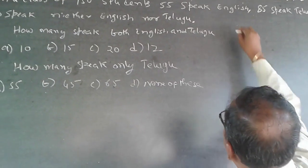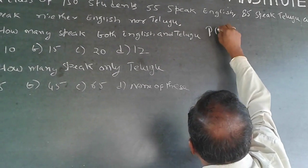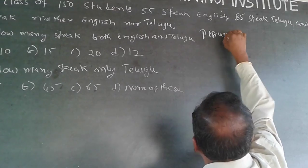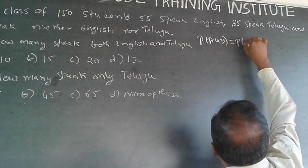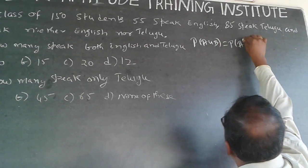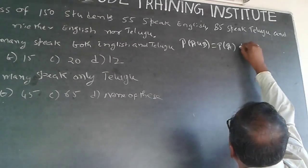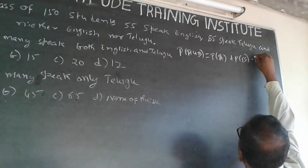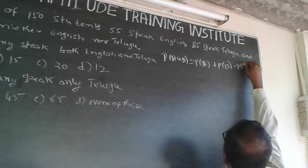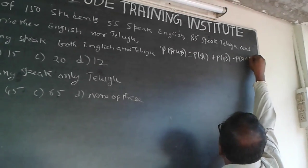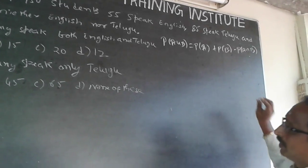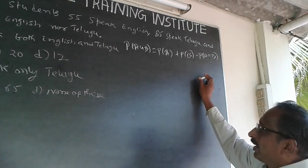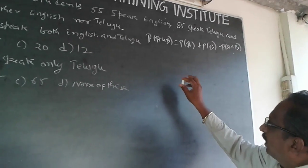The formula is: P(A ∪ B) = P(A) + P(B) − P(A ∩ B). This is the set theory Venn diagram formula.